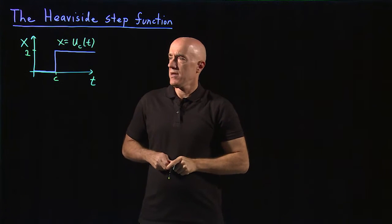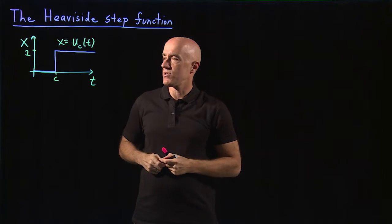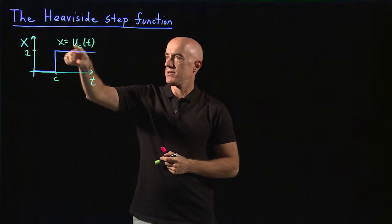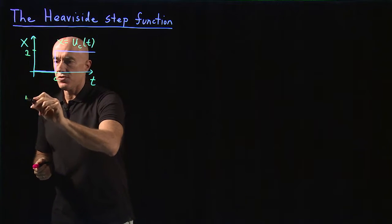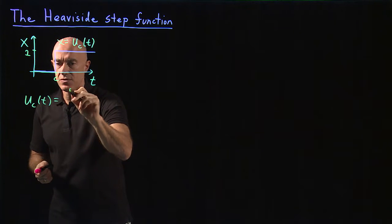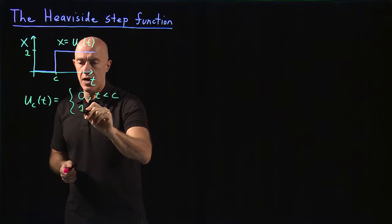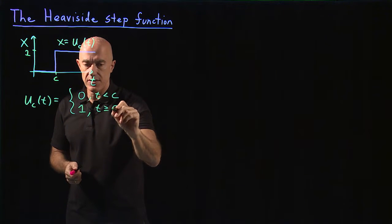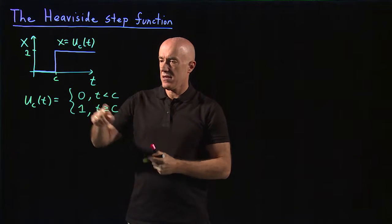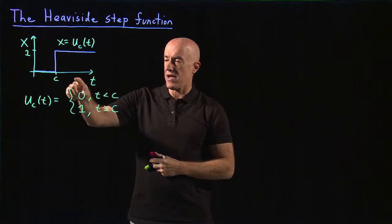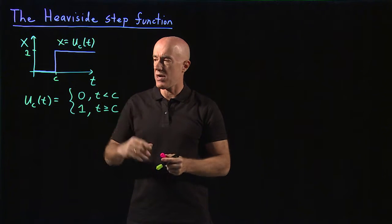The Heaviside step function is a function of t but it has a parameter c. We can write down the mathematical formula: u_c(t) is equal to zero when t is less than c, and one when t is greater than or equal to c. It actually doesn't matter how you define it at c — whether it's zero or one — but here we'll use the convention that we define it to be one at c.